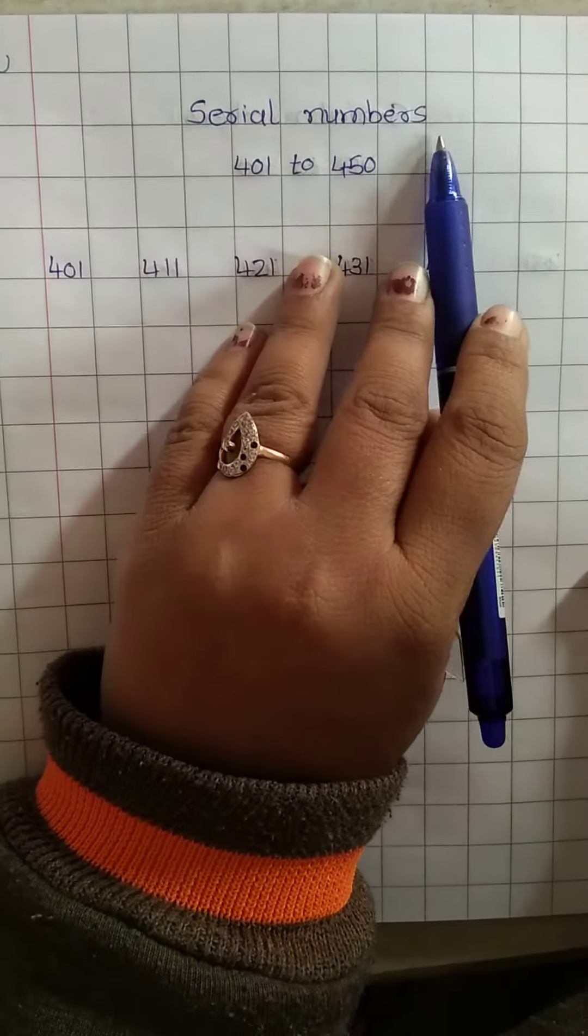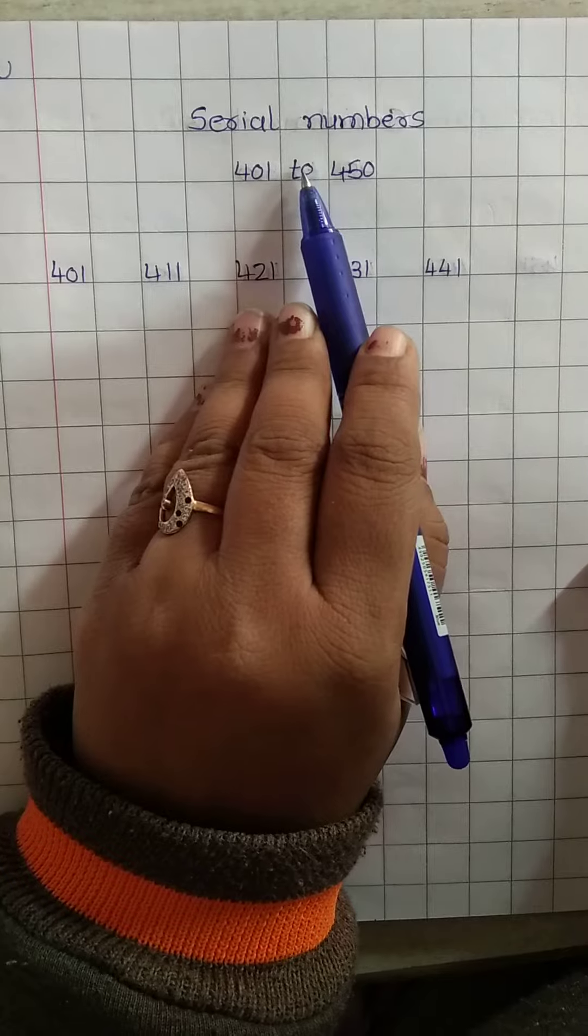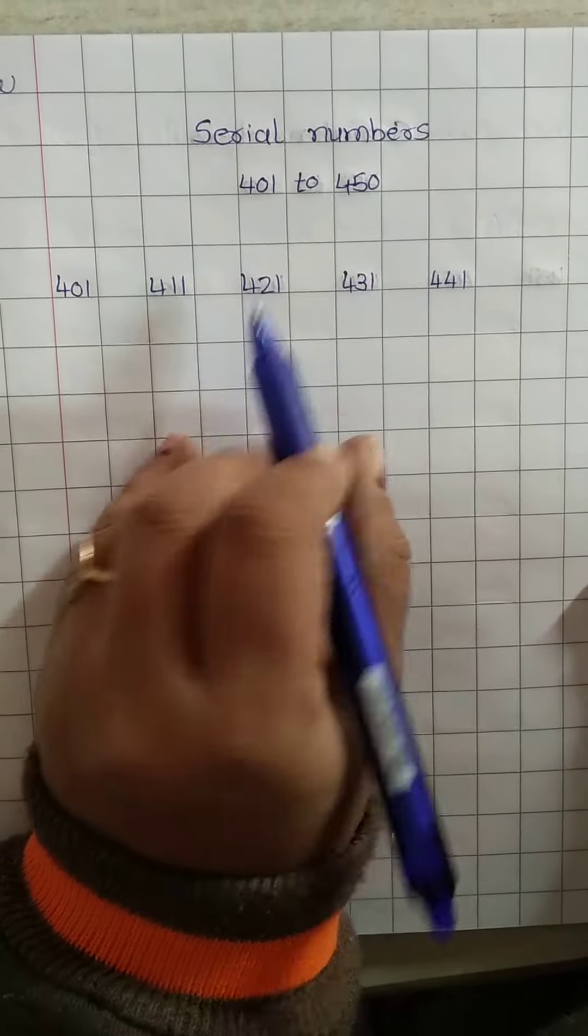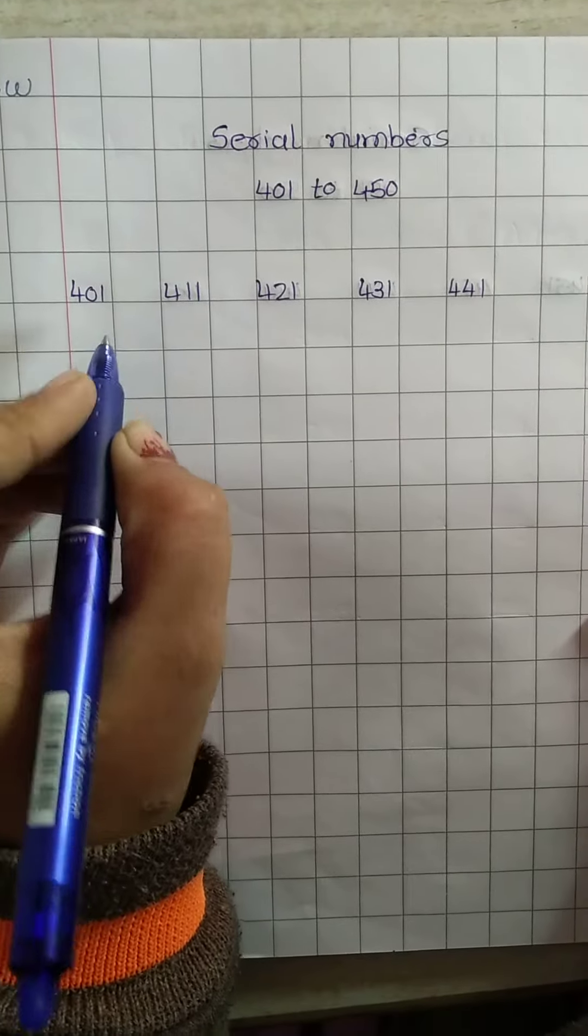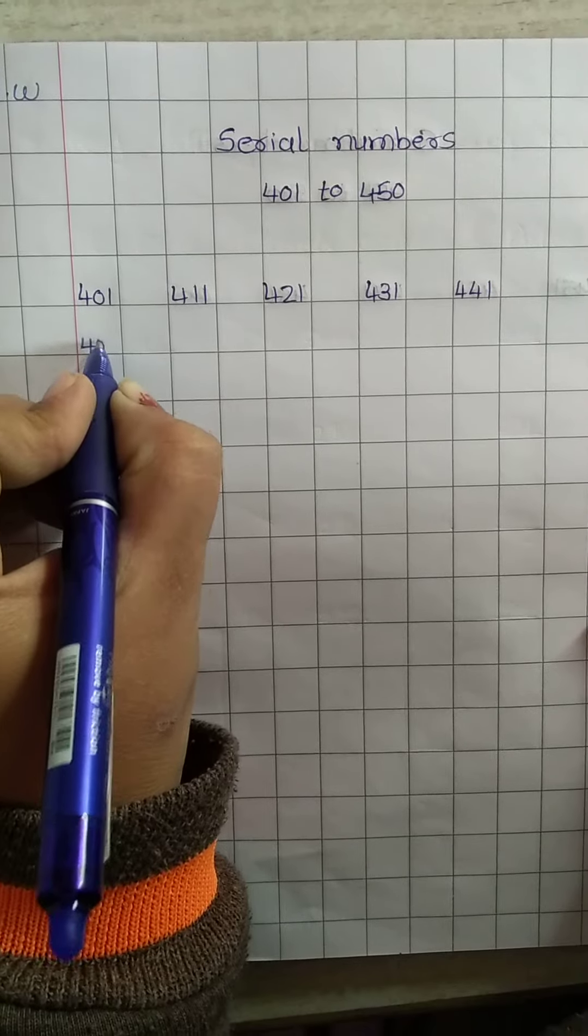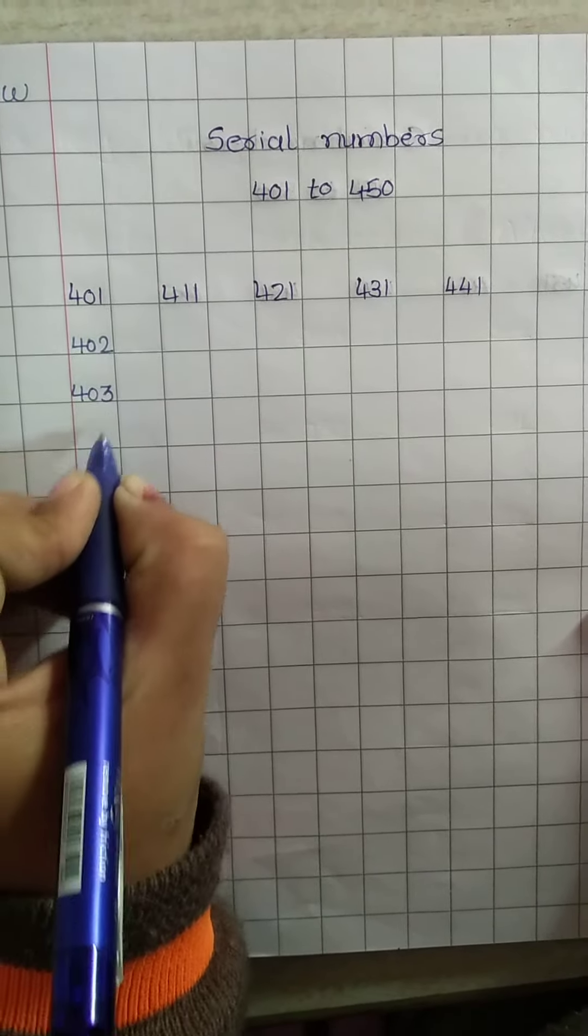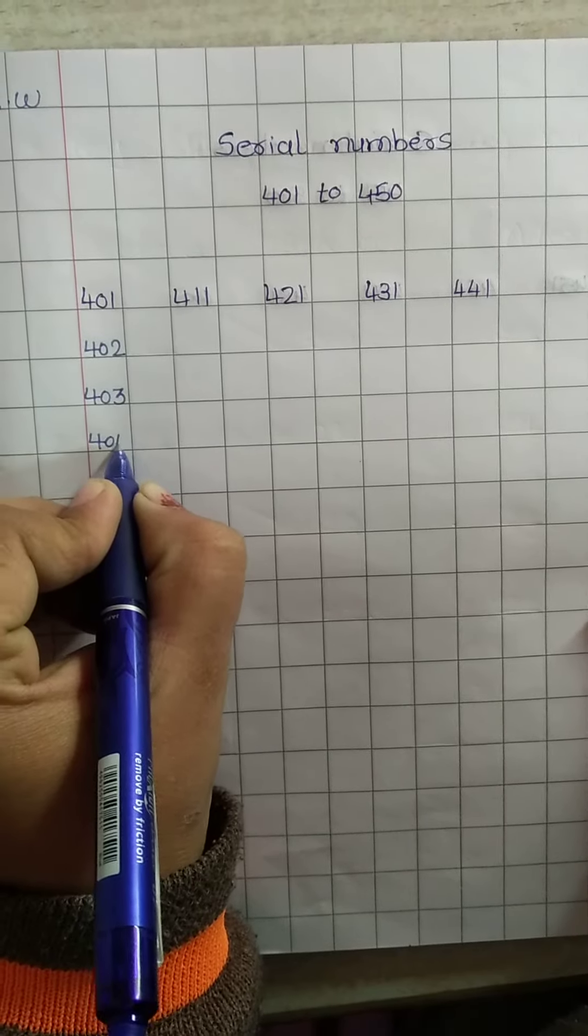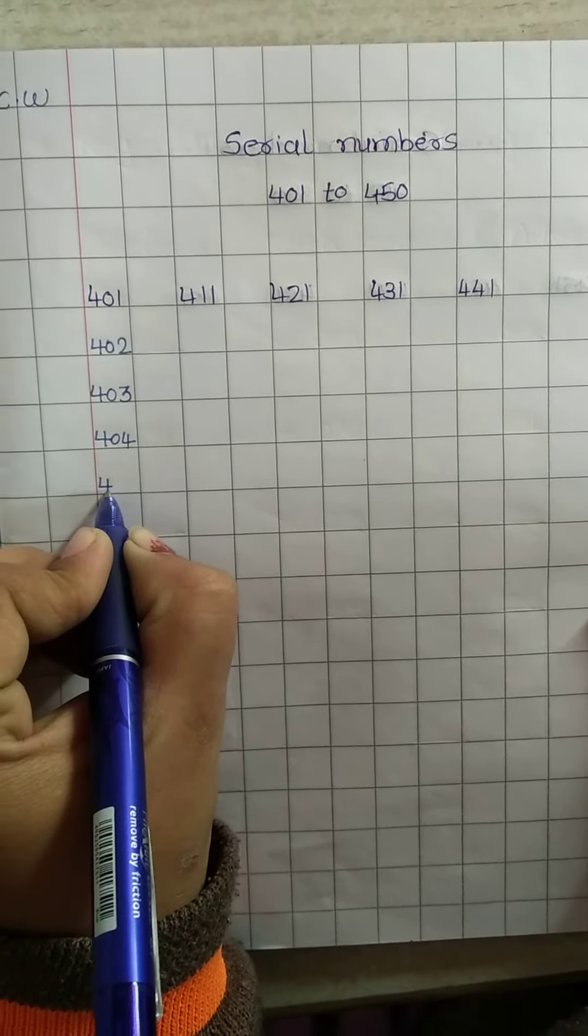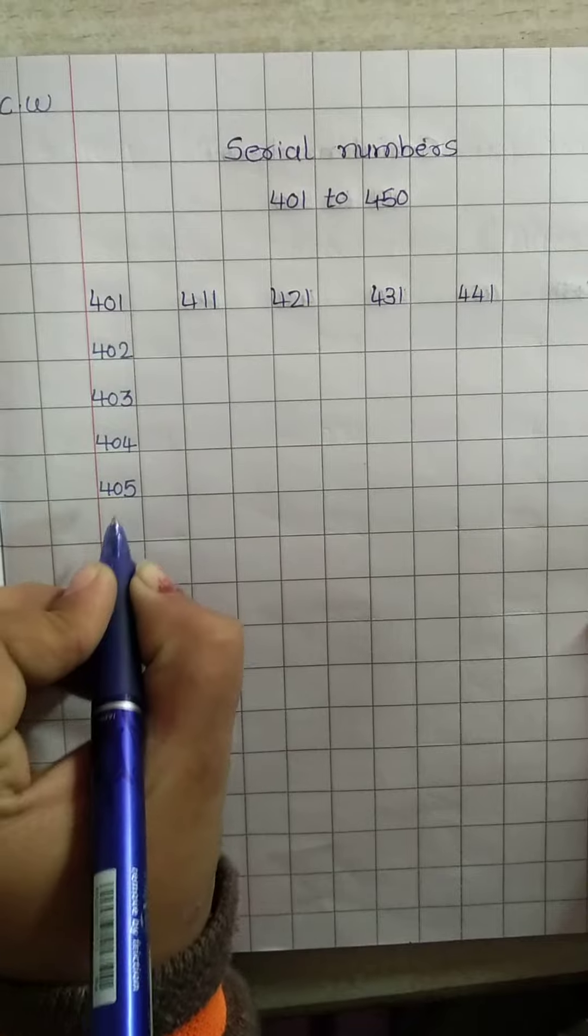Today we learn serial numbers 401 to 450. Now here, 401, then after 402, then after 403, then 404, 404 after 405.